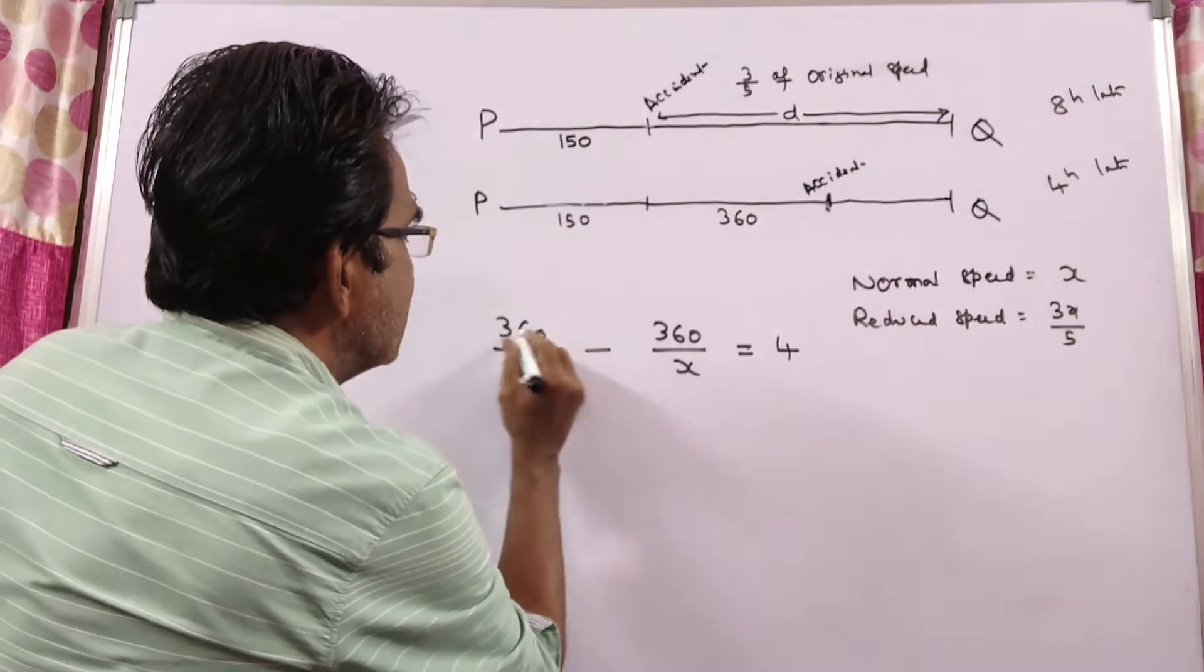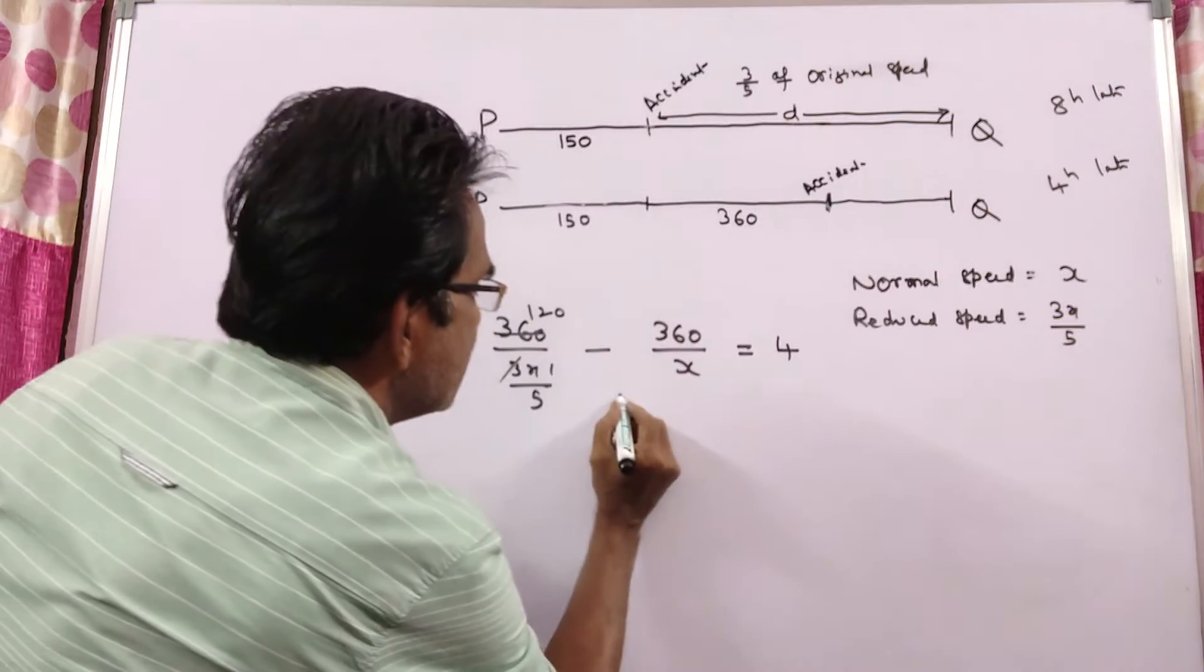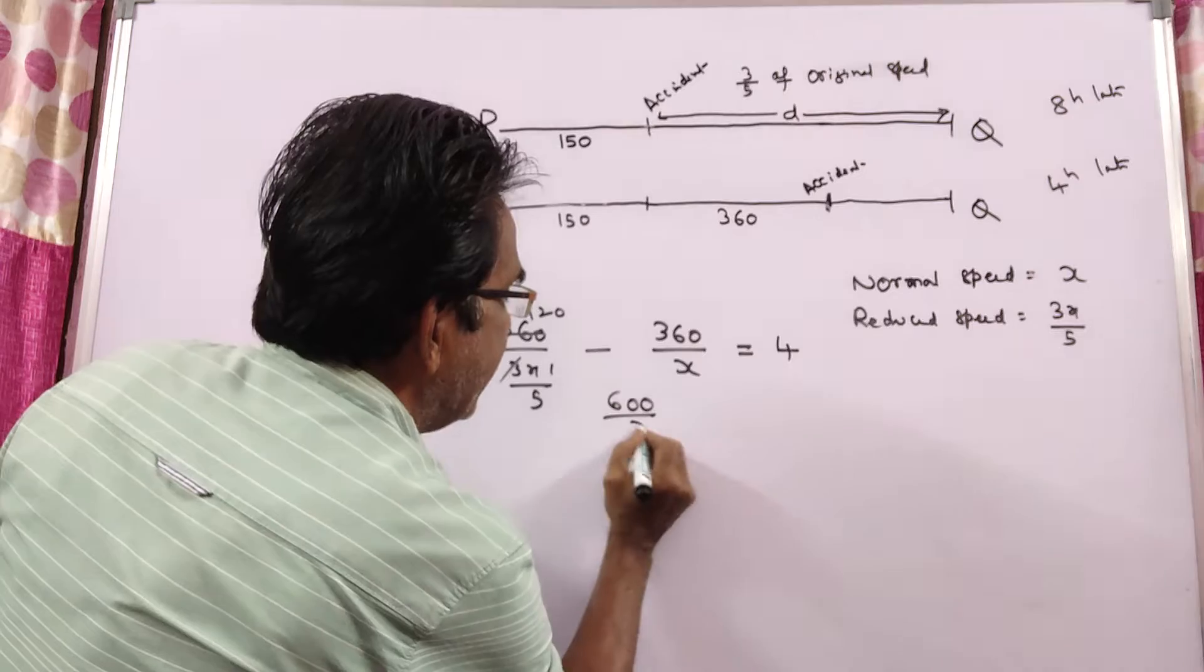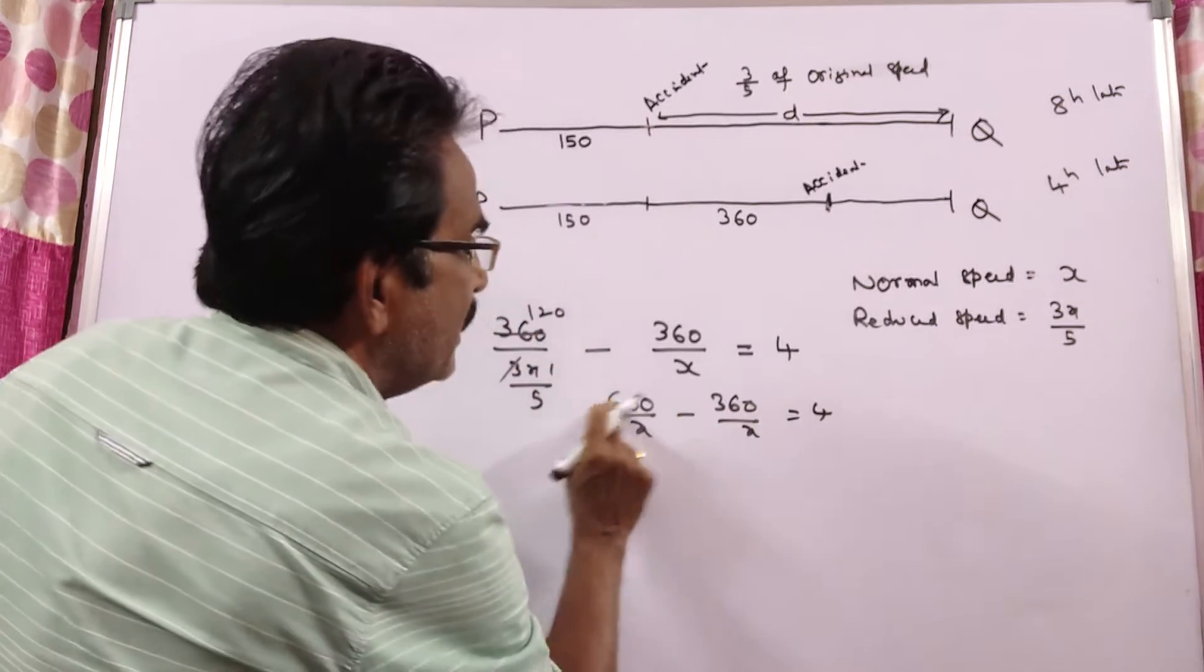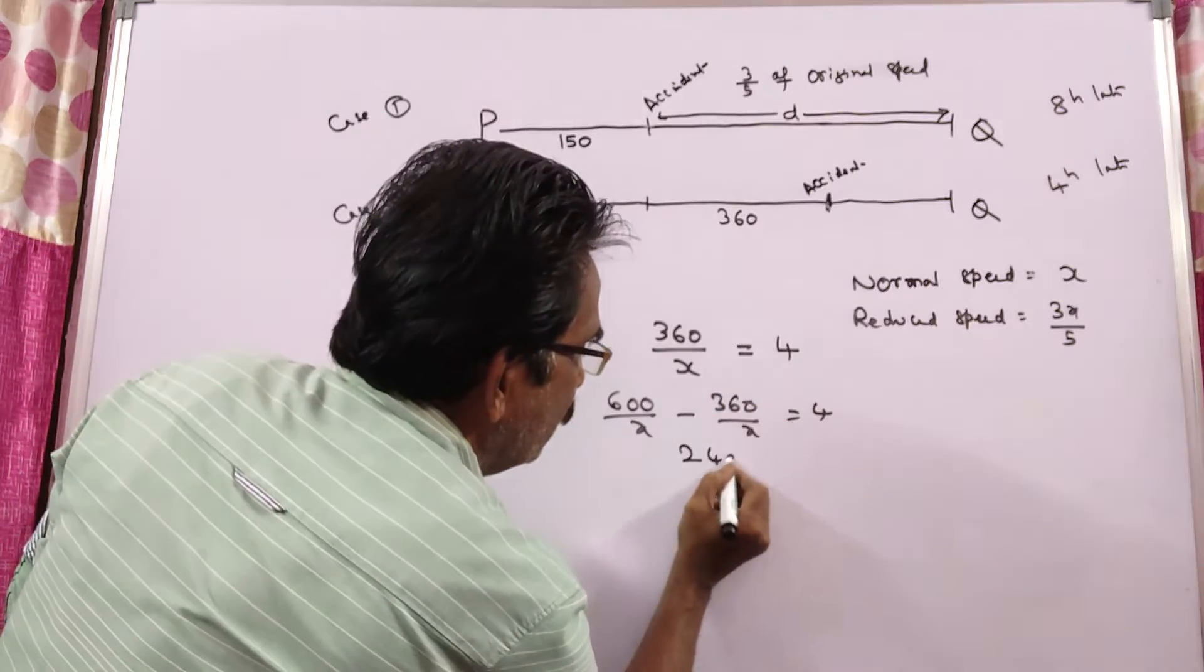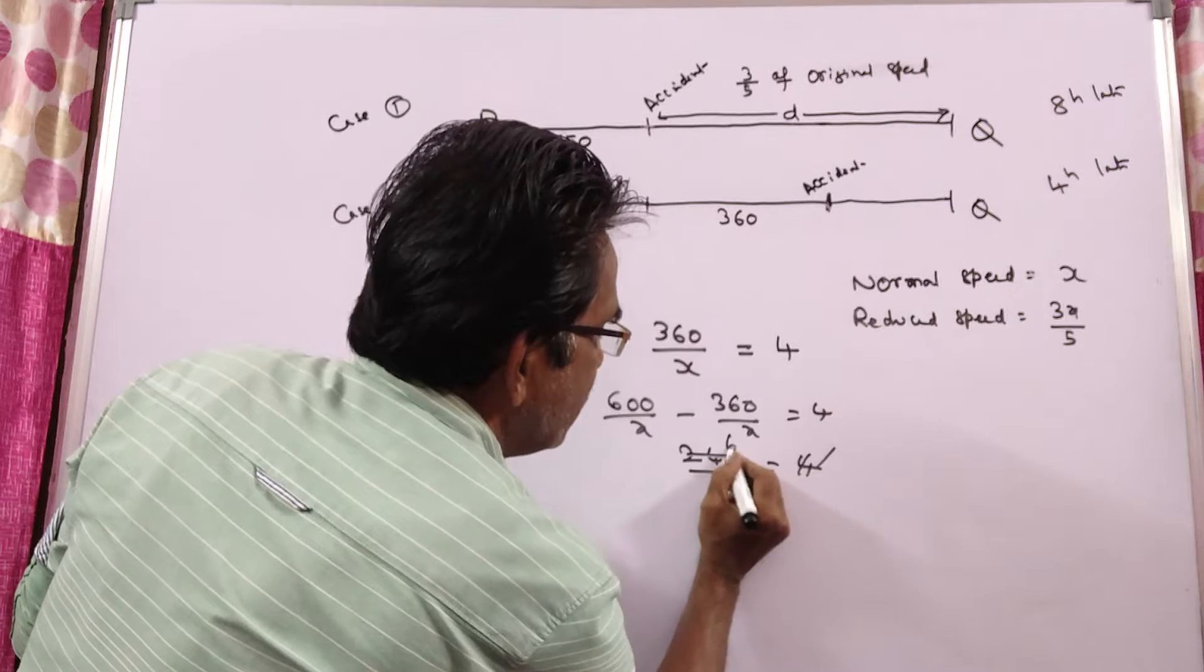So, 3 into 120, 5 into 120, 600 by x minus 360 by x is equal to 4, 240 by x, 240 by x is equal to 4.